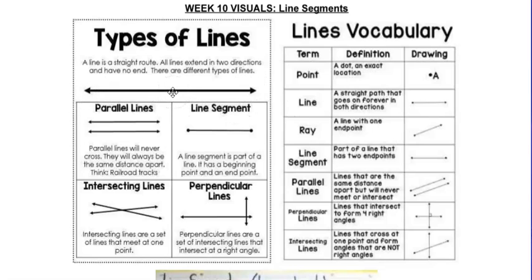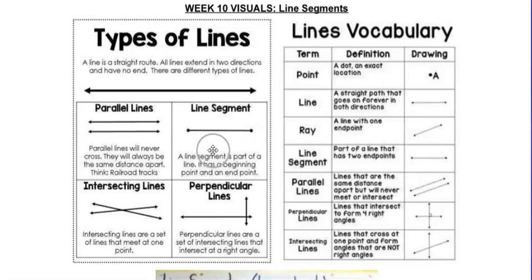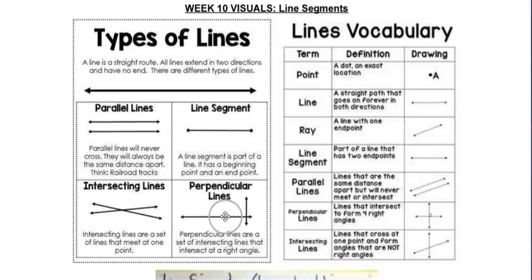Parallel lines are like a railroad track — they never intersect and they're never going to cross each other. A line segment has a point on each end, showing it has a starting point and an ending point. Intersecting lines meet somewhere but they go on forever. Perpendicular lines cross at a 90-degree angle, kind of like a T shape.